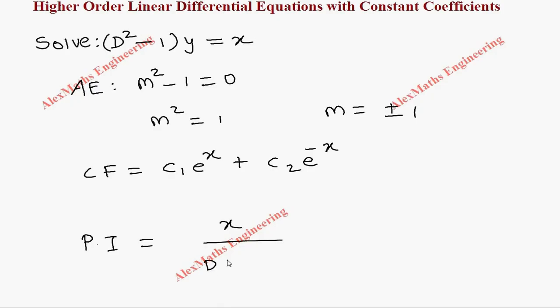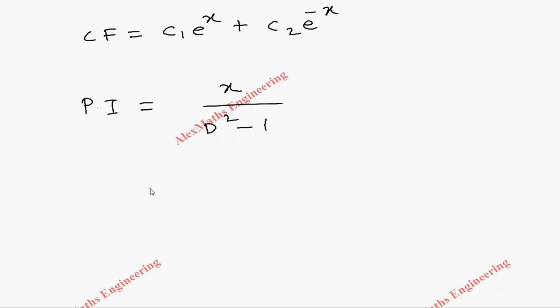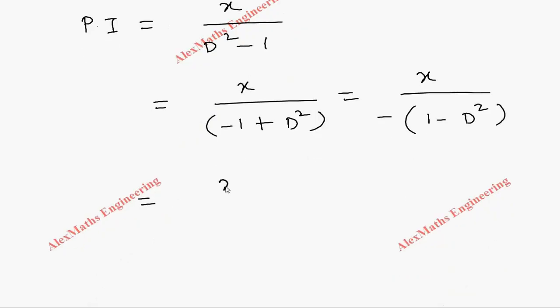Let's write -1 + D². We need 1 as the first term, so it's better to take minus in common: 1 - D². Now we have to carry this to the numerator: x/(-1) with (1 - D²)^(-1).